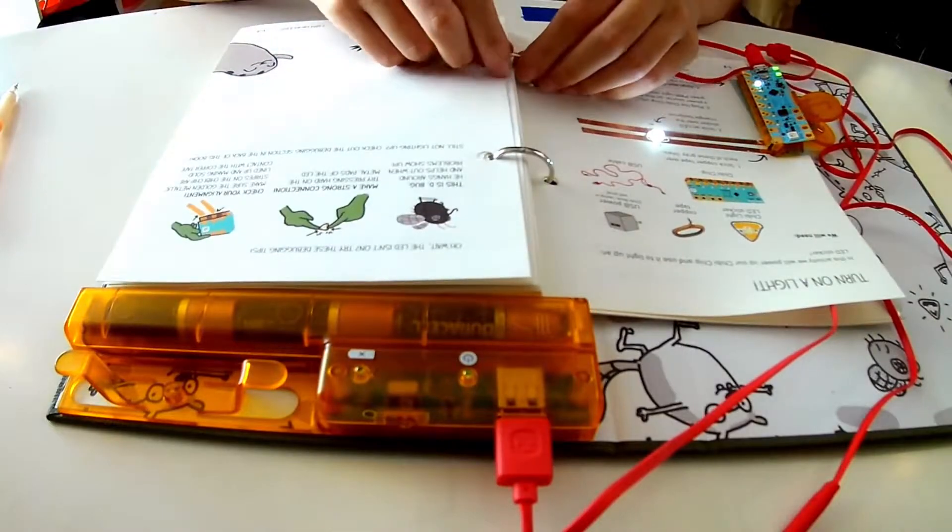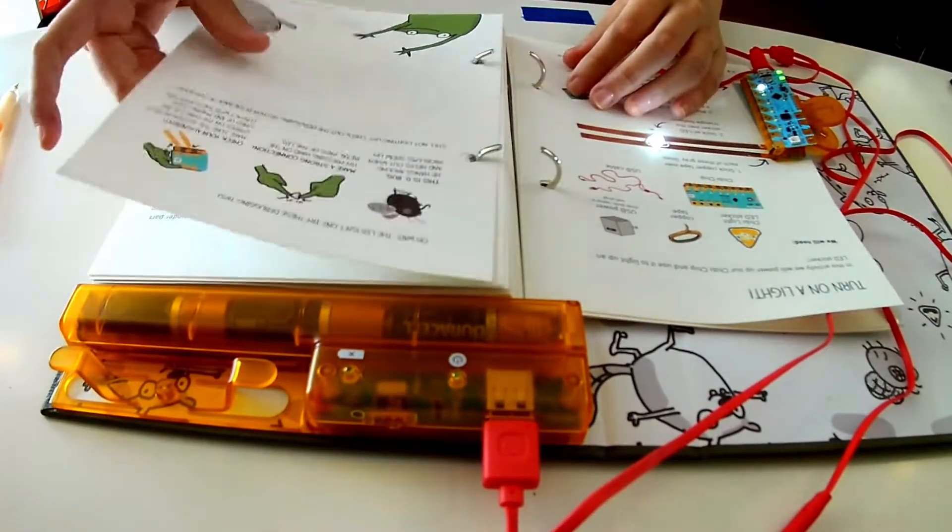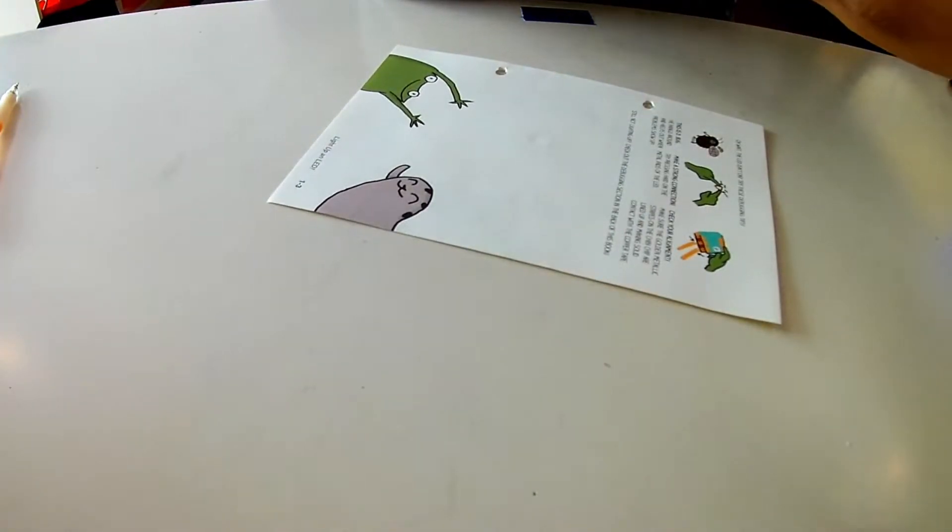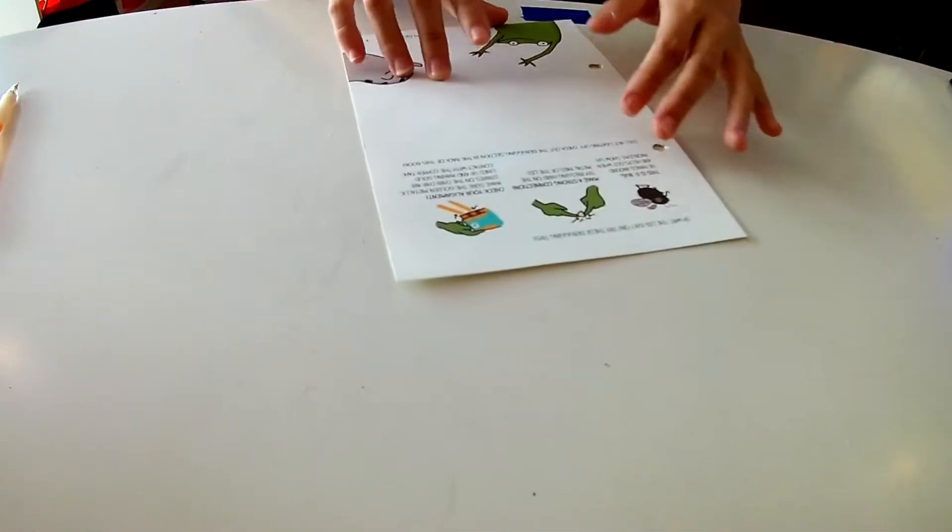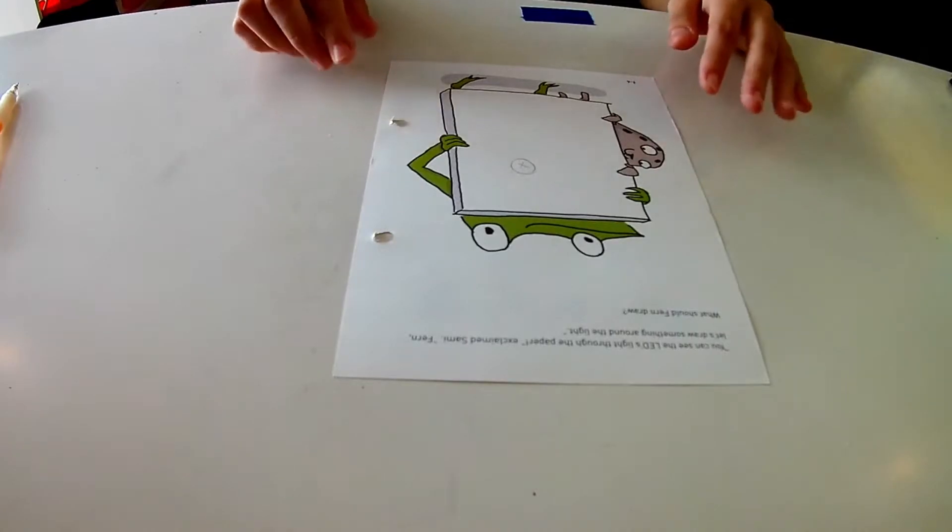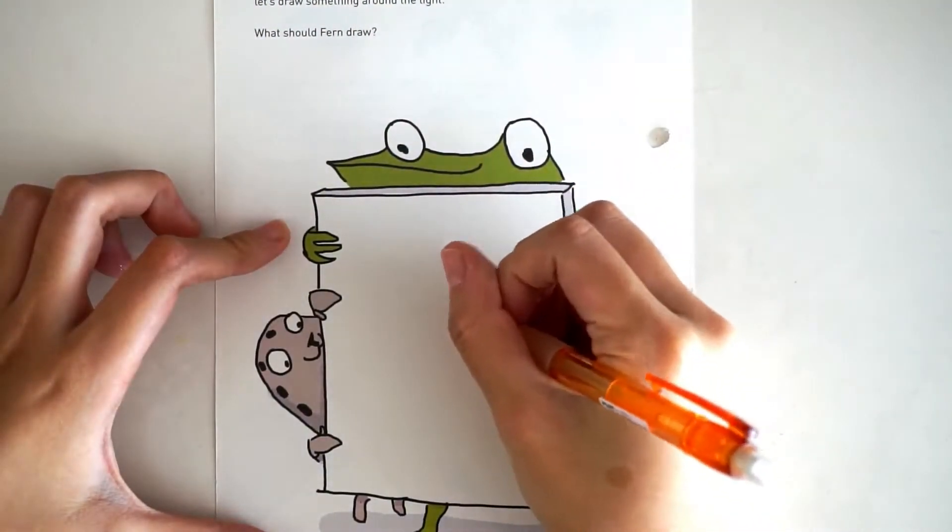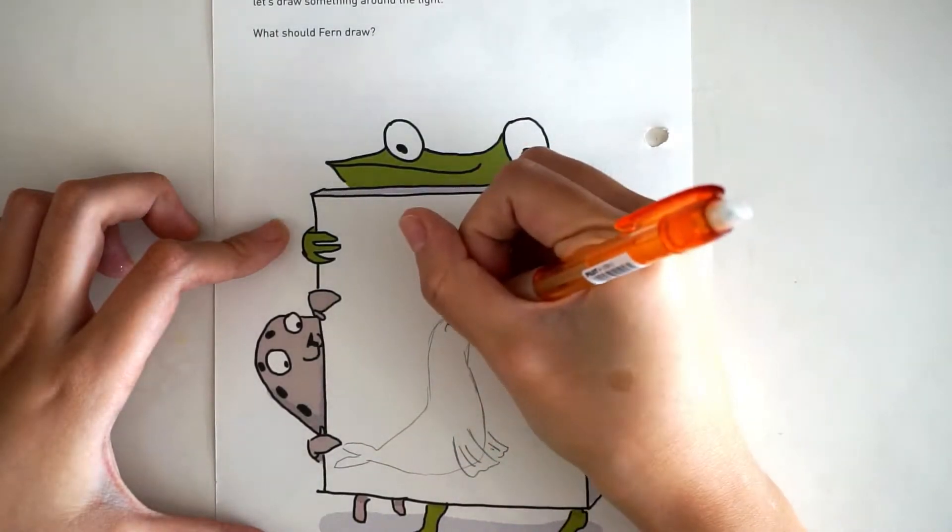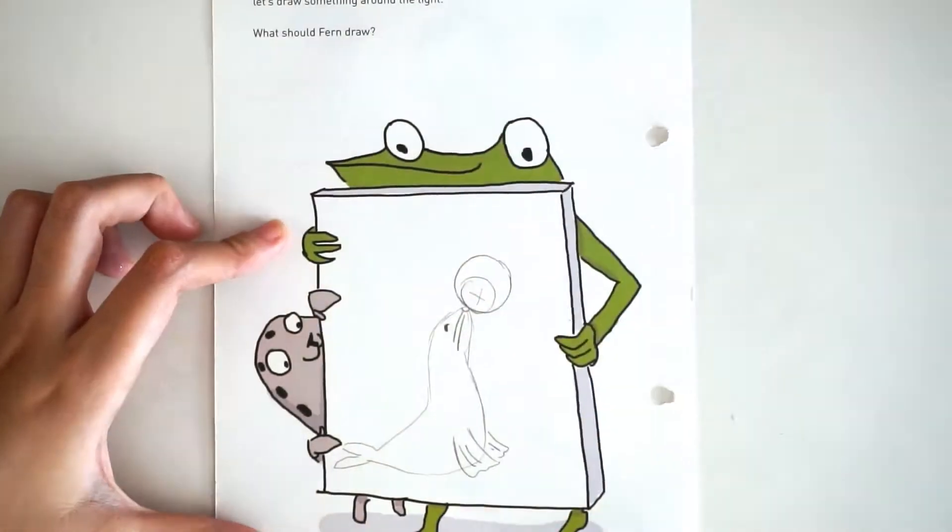Then remove the page from the binder and put it on the table so you have a flat surface to draw on. We're going to draw a seal lighting up a ball with its nose. First we sketch the scene using a pencil.